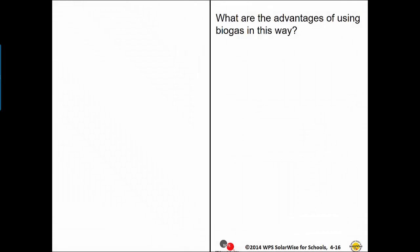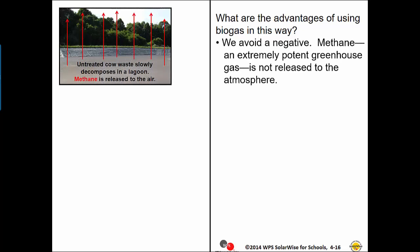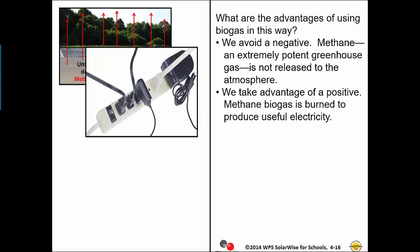What are the advantages of using biogas in this way? We avoid a negative: methane, an extremely potent greenhouse gas, is not released to the atmosphere. We take advantage of a positive: methane biogas is burned to produce useful electricity.